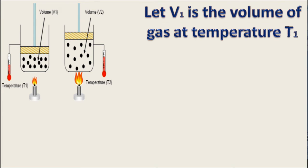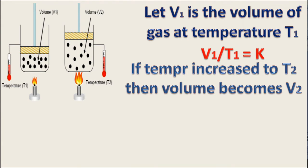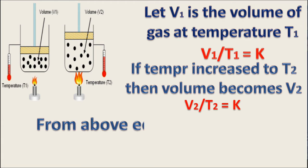Let V1 be the volume of gas at temperature T1. Then V1 by T1 equals constant. If temperature increases to T2, then volume becomes V2, or V2 by T2 equals constant. From above equations, V1 by T1 equals V2 by T2, which is called the equation of Charles's Law.